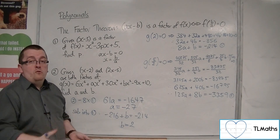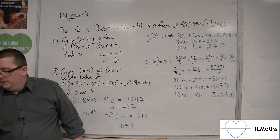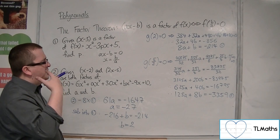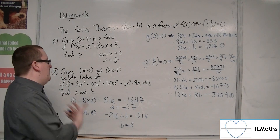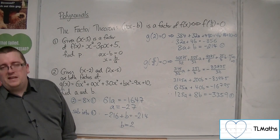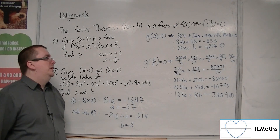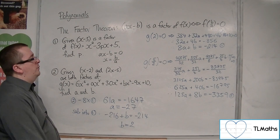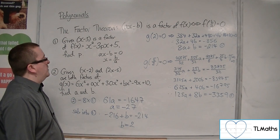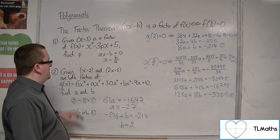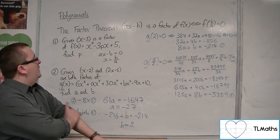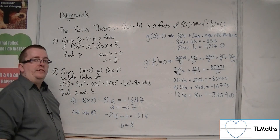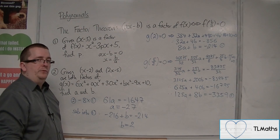So a is minus 27 and b is 2. This is a pretty extreme example — very complicated just based on the numbers. The actual mathematics behind it isn't challenging; it's really just keeping track of large numbers. You can keep simplifying things using a calculator. This gives you an idea of what you can do using the factor theorem, and it's a pretty efficient approach.